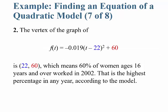What is the vertex of the graph? We picked that to be (22, 60). So this means 60% of women ages 16 and over worked 22 years since 1980, which is 2002, and this is the highest percentage for any year according to our model.